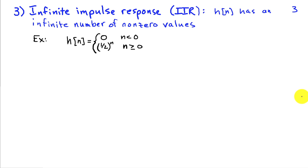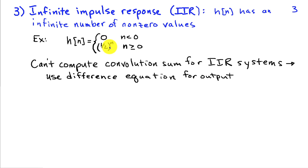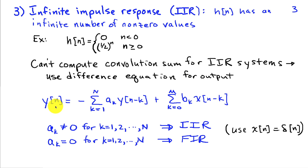In contrast, an infinite impulse response system has an impulse response that lasts forever — an infinite number of non-zero values. For example, a causal system where the impulse response is 1 half to the n for n greater than or equal to 0 decays toward zero but never exactly reaches it. Because the convolution sum then has an infinite number of terms, we can't compute it directly on a computer. Instead, we implement IIR systems using a difference equation of the form y of n equals negative sum from k equals 1 to N of a_k times y of n minus k plus sum from k equals 0 to M of b_k times x of n minus k.